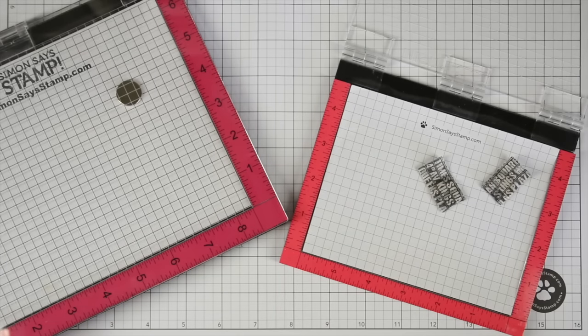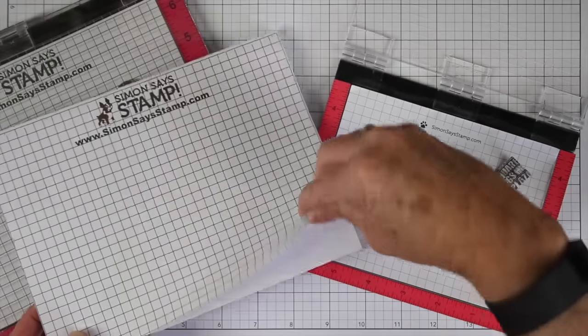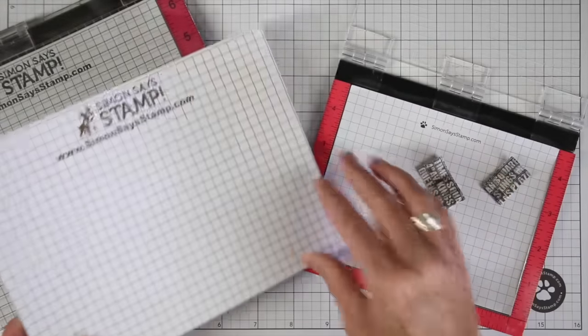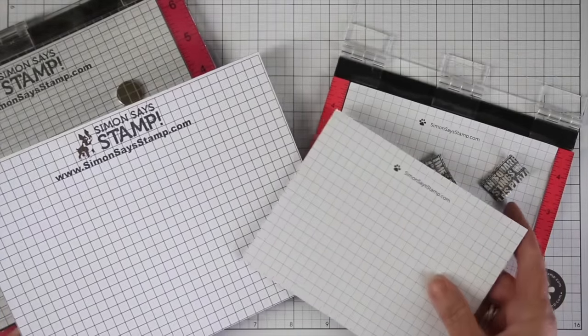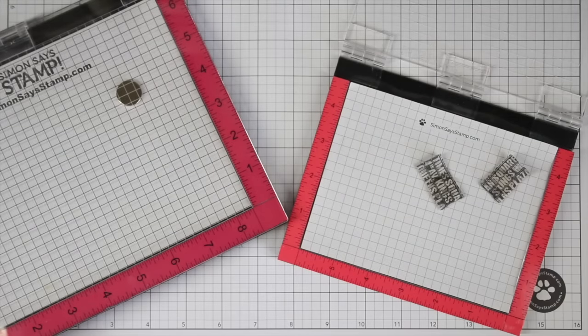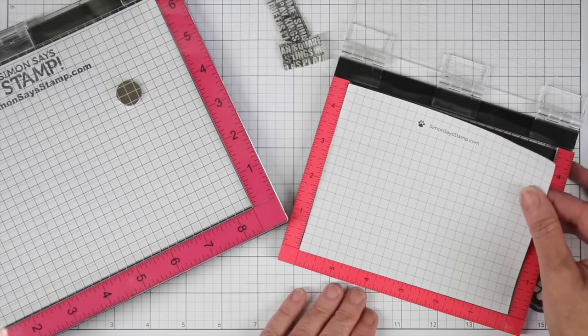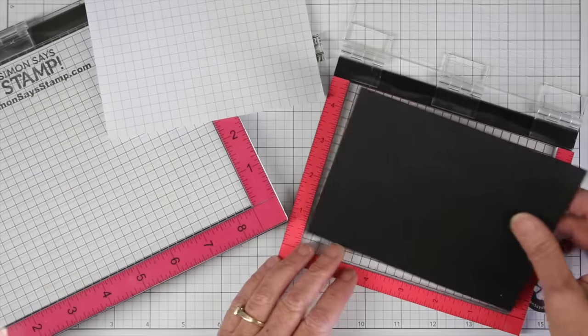Now that I have my magnets all set up, I want to show you the grid pads that Simon Says Stamp has. And this is a pad of grid pads and you're just going to use one sheet at a time. We have those for the regular MISTI and also the mini MISTI. These are used for aligning your stamps. So I also want to show you the foam piece that comes within each of the pads.